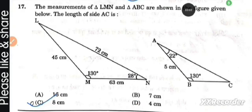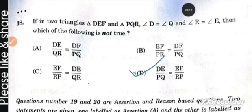Next question, question number 17: The measurements of triangles LMN and ABC are shown in the given figure below. The length of the side AC is 8 centimeters.